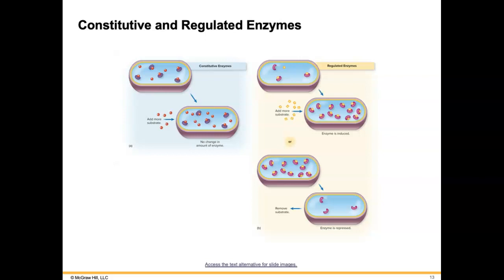So we have constitutive and regulated enzymes. You can see in this image here that we have constitutive enzymes. Basically what that means is the number of enzymes that are available within the cell are constant. They're there whether the substrate is deficient or whether there is an abundant load of substrate. The constitutive enzymes stay constant — they're going to be there in the same numbers regardless of how many substrates are there.